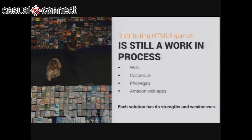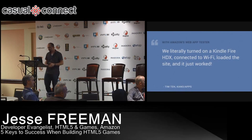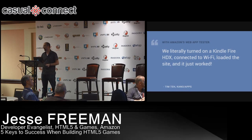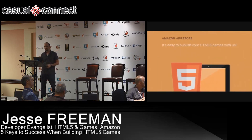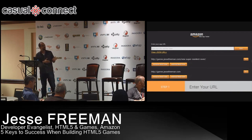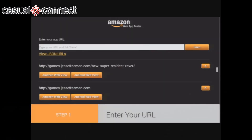Distribution options include Cocoon.js, which is a native-like wrapper, PhoneGap, and at Amazon we have the Amazon Web Packager. We got a quote from Tim Tay from Kano Apps who was literally able to open a Kindle Fire, turn it on, plug it to the Internet, and put his game on the device immediately. We made it super easy for web developers to publish with us. You download our web app tester, put in the URL to where your game is, keep your game online where it normally lives, and we package it up for our store next to native games. It runs at high performance because we've optimized the web view specifically for web apps and games on our platform.